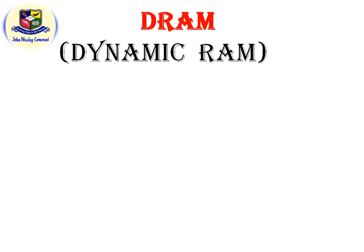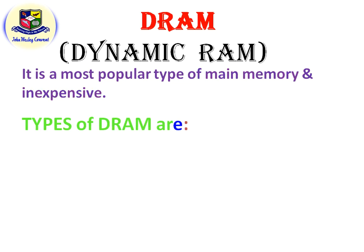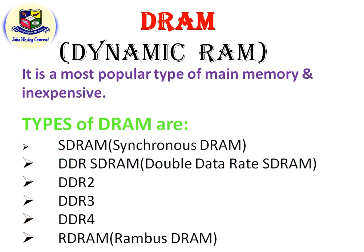DRAM stands for Dynamic RAM. It is the most popular type of main memory and it is inexpensive. Various types are available: SDRAM, DDR SDRAM, DDR2, DDR3, DDR4, and RDRAM.